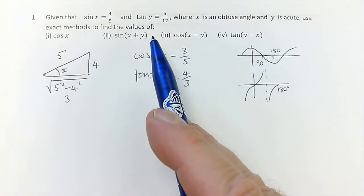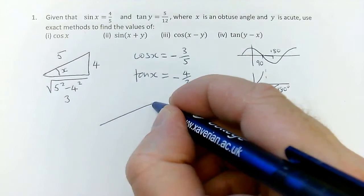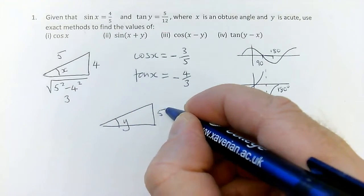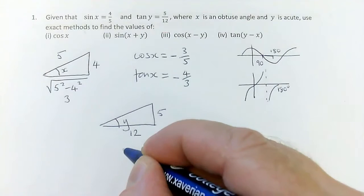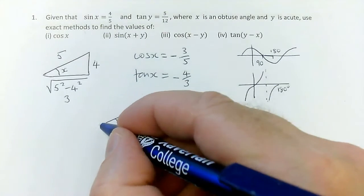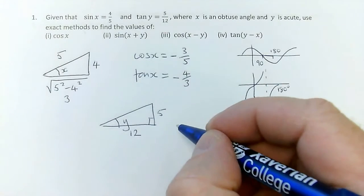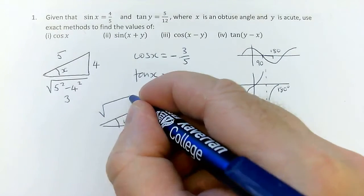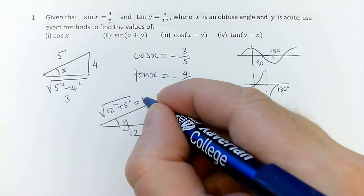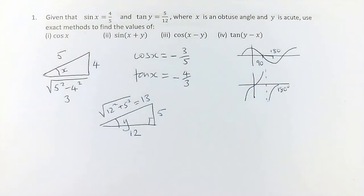And now I've got to do tan of y, which is 5 twelfths. So in a y triangle, if that was y, that would be 5. That would be 12. Now, opposite over adjacent, you see, for a tan. And then the hypotenuse would be the square root of 12 squared plus 5 squared, which is 13, because this is a 5, 12, 13 triangle, one of those other well-known ones.